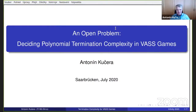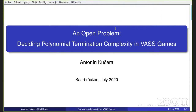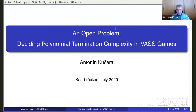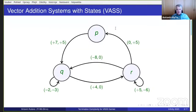The problem I'm going to talk about is related to deciding polynomial termination complexity in VAS games. I need to explain what I mean by termination complexity — this is the only notion I need to explain. Once I'm done with that, I will tell you what is known about termination complexity analysis in VAS games, and then I will revisit the problem and discuss more details.